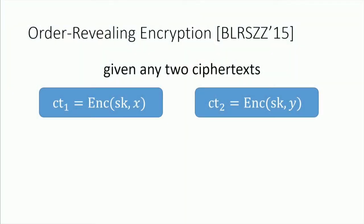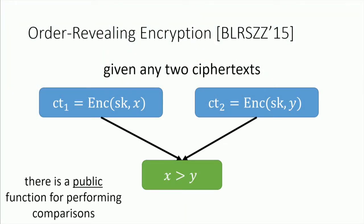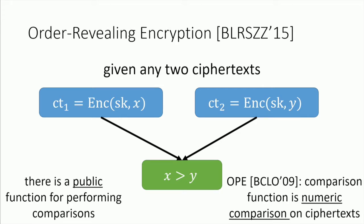To make the concept clear: if you have two ciphertexts encrypting values x and y, in an order-revealing encryption scheme there is a public function that does not require decrypting x or y that will allow you to learn whether x is greater than y. Some of you may be familiar with an earlier notion called order-preserving encryption, introduced by Boldyreva, Chenette, Lee, and O'Neill, where the comparison function is just a direct numeric comparison on the ciphertext itself, imposing a structural requirement on the ciphertext space. This is sort of the state of the art for implementing comparisons on encrypted data.